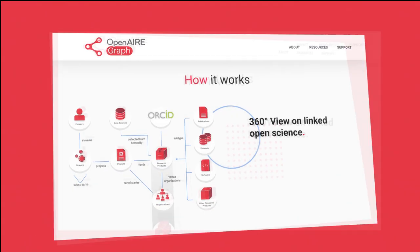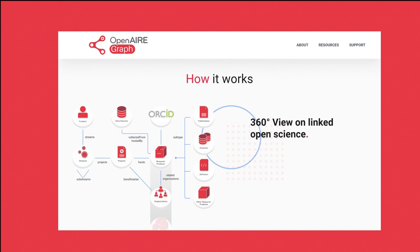GRAPH includes information about research outputs such as publications, datasets and software, citations, impact and usage indicators, funds and funders, authors, organizations, and communities.